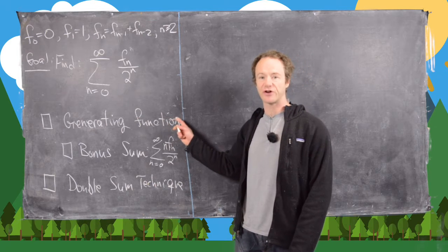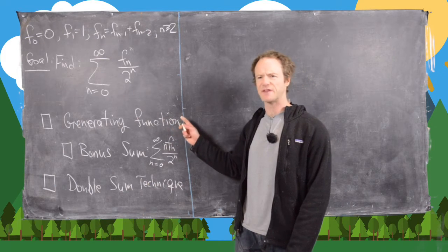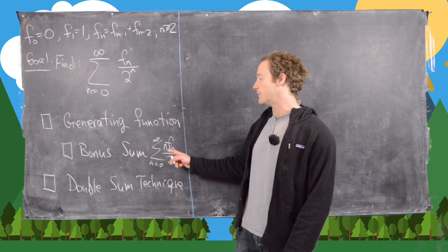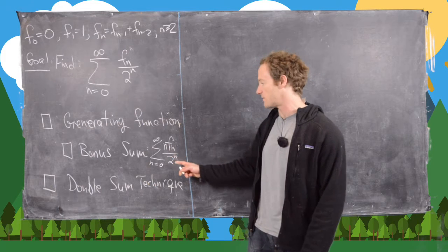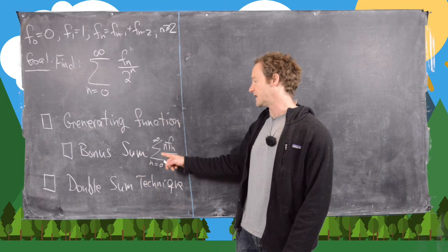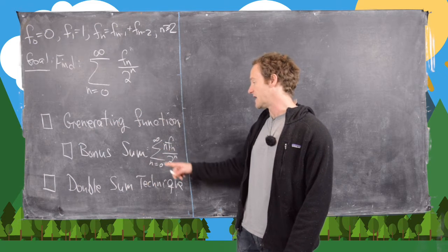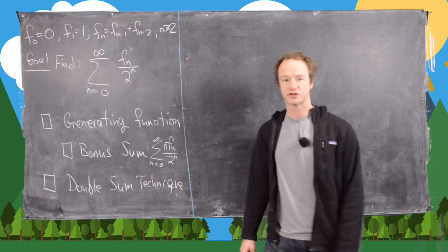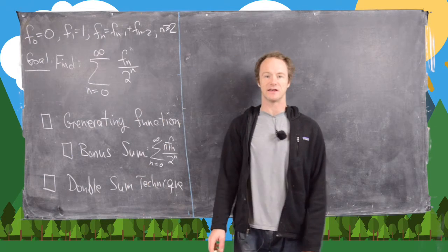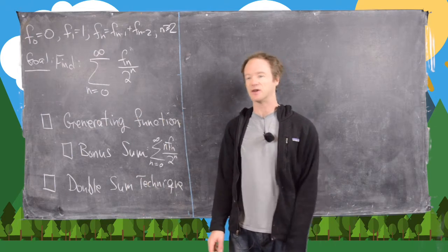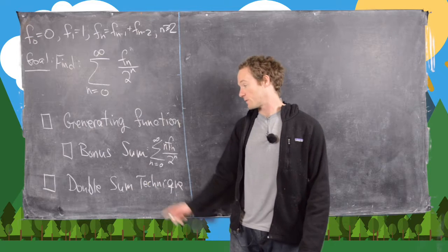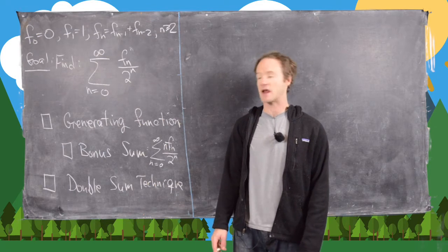First we'll use a generating function, which is maybe the standard way. As a bonus, we'll also find the sum from n=0 to infinity of n·f_n / 2^n. Then we'll use a double sum technique that came from a recent video by blackpenredpen.